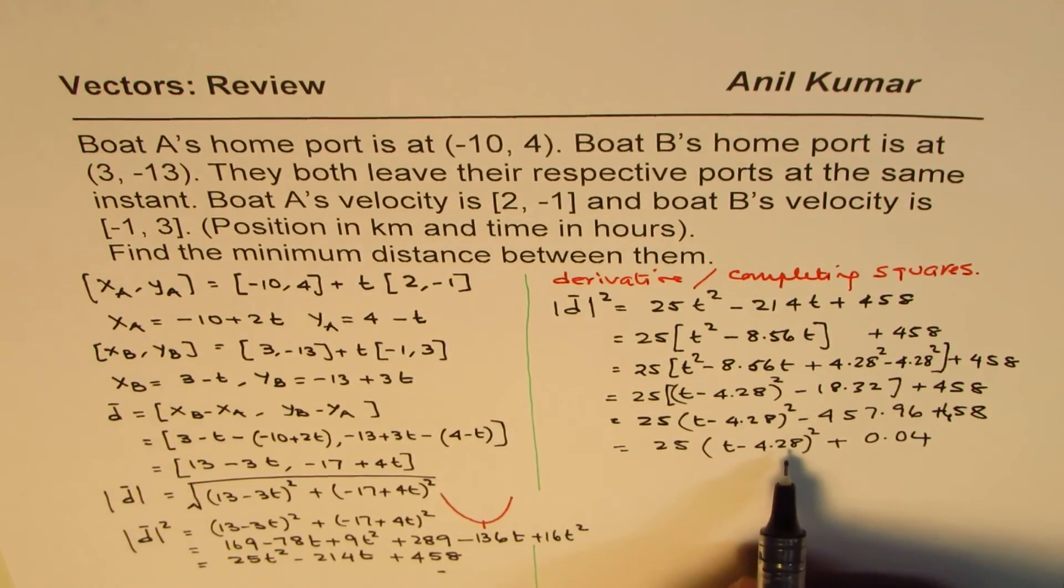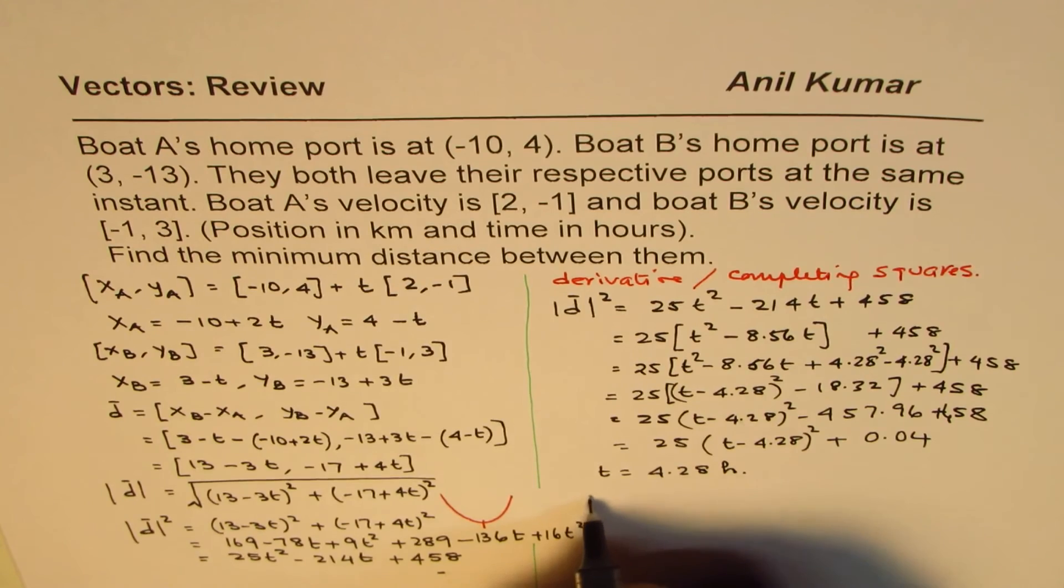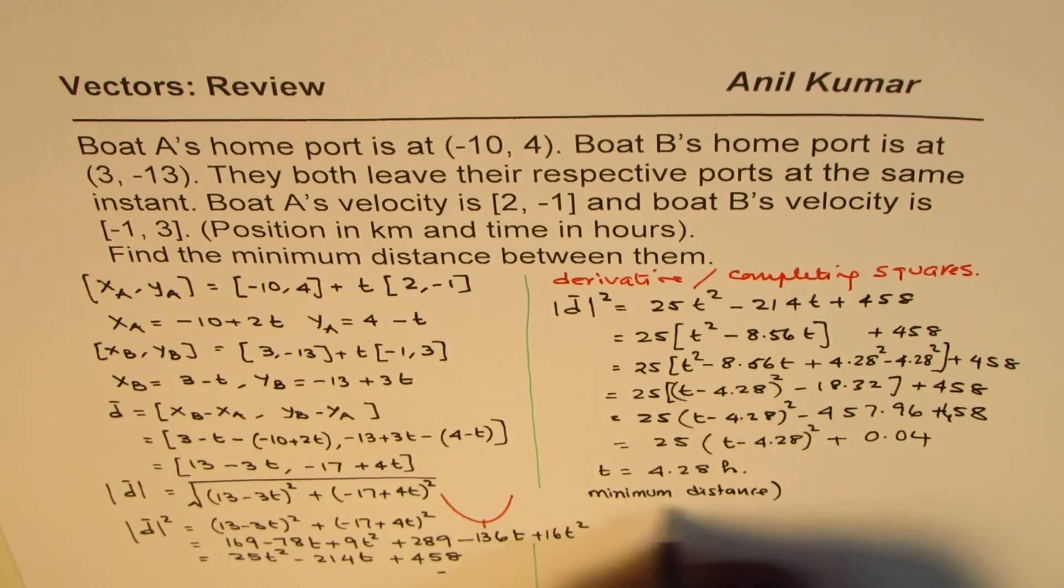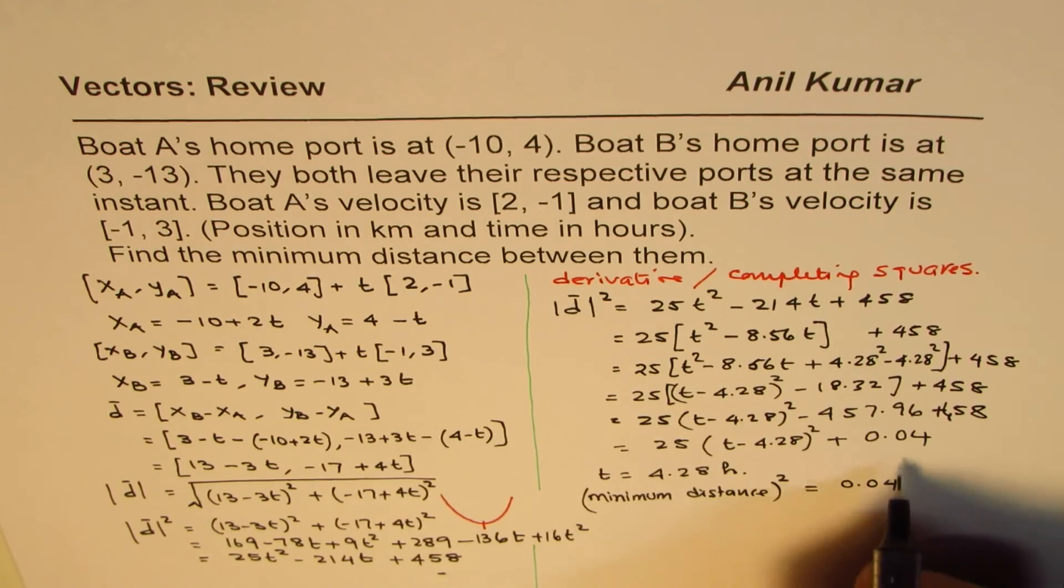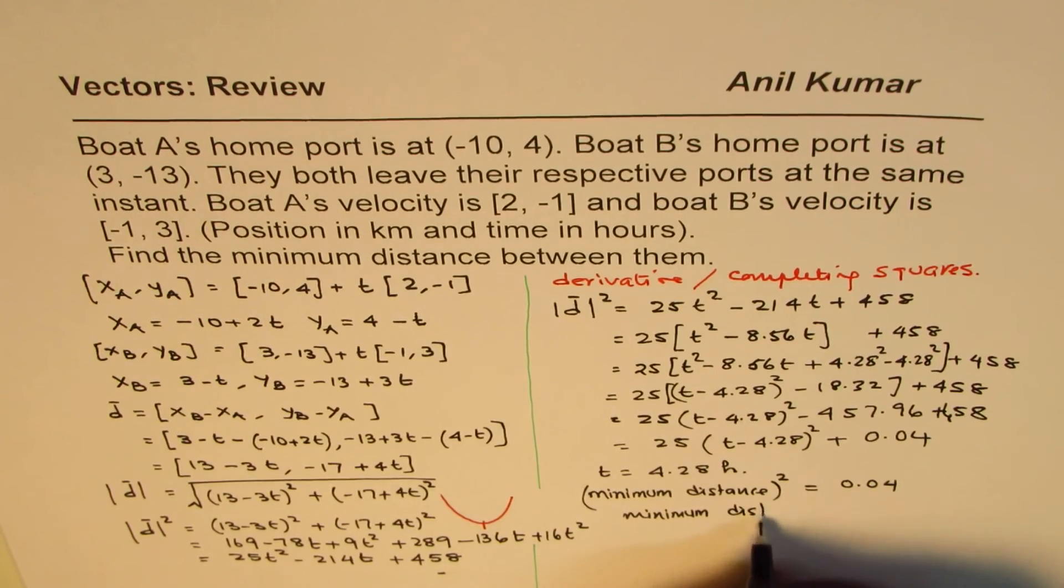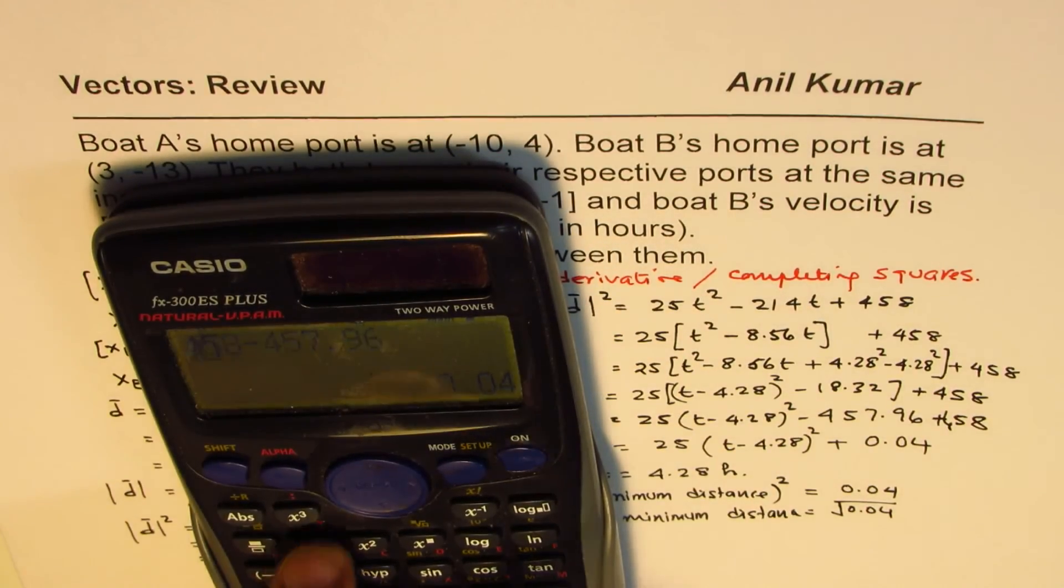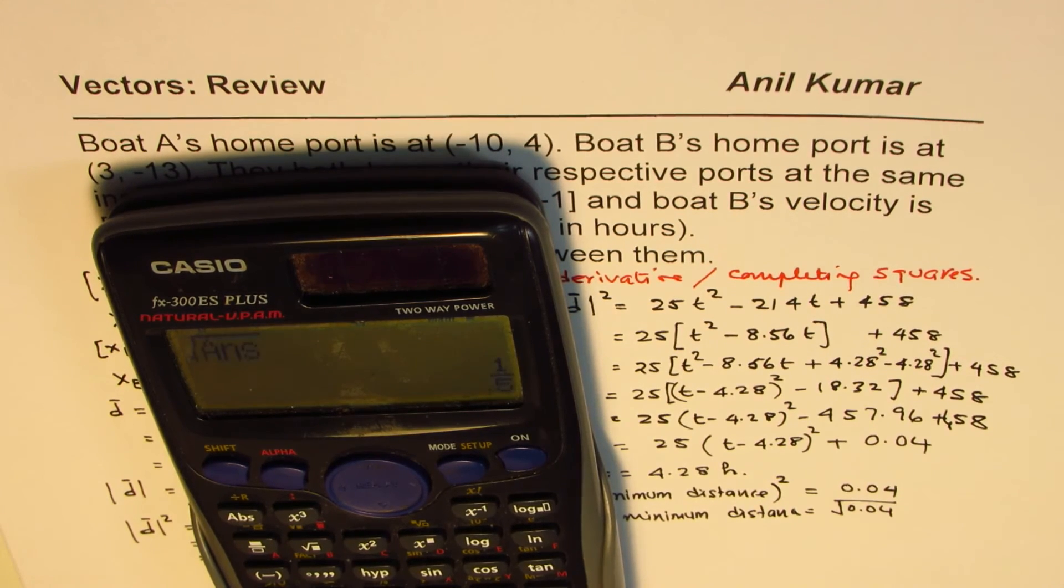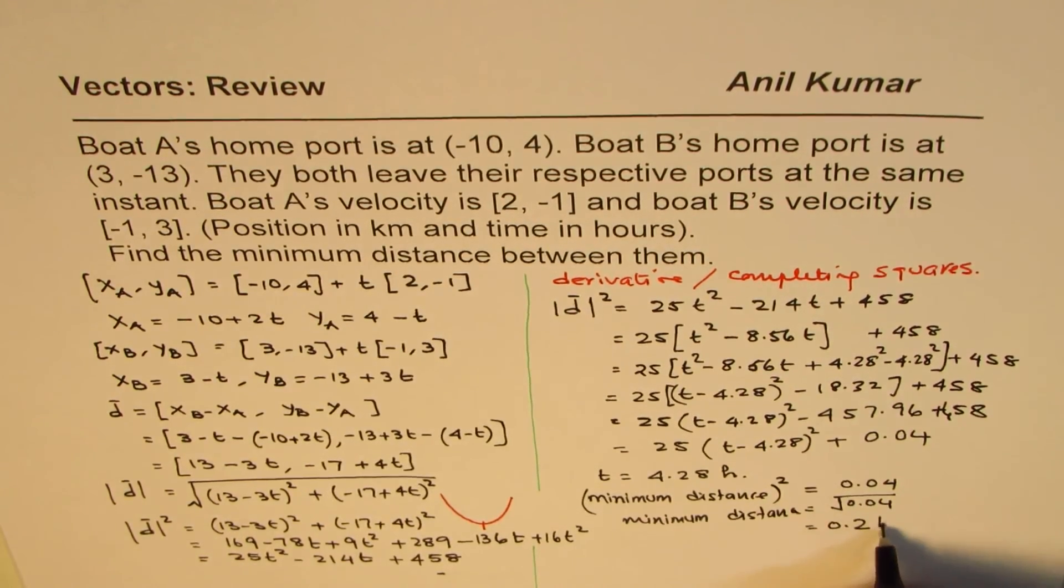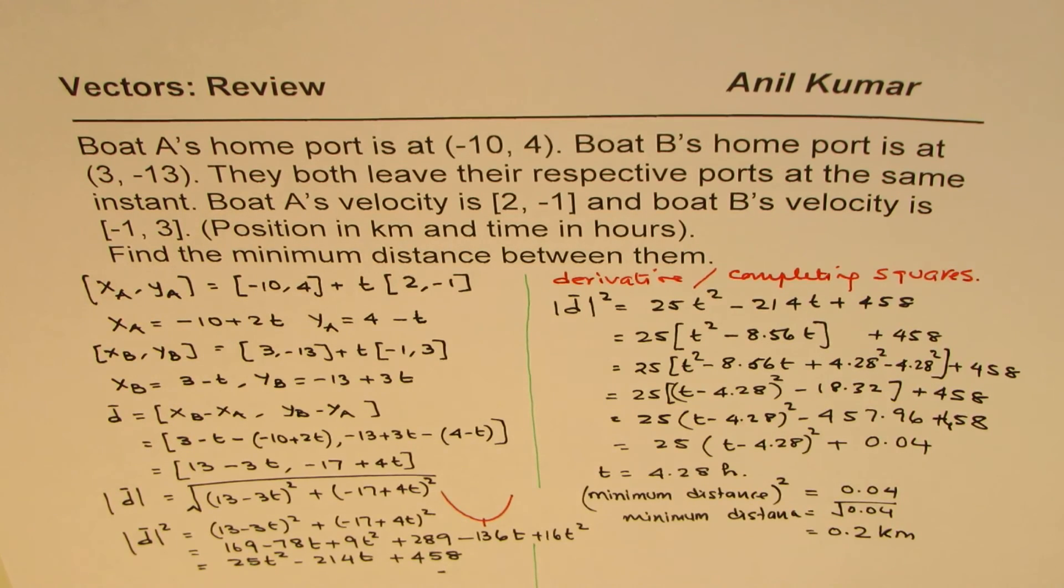What we get here is that at t equals 4.28 hours minimum distance. What we get is the square root of 0.04. So the answer is 0.2. That is our answer. Minimum distance is 0.2 kilometers, which will be after 4.28 hours.